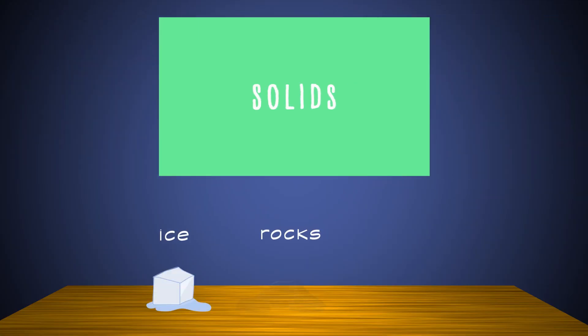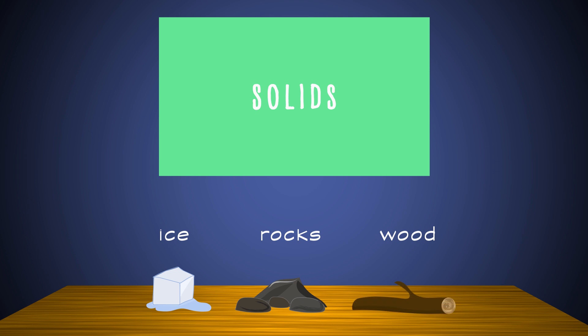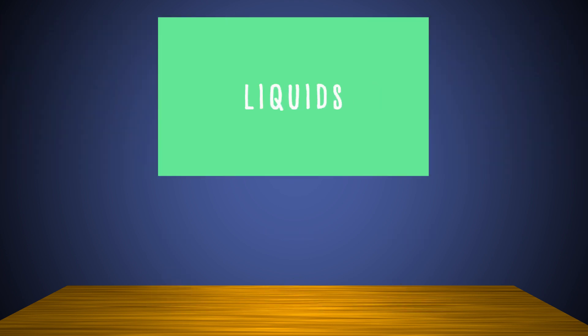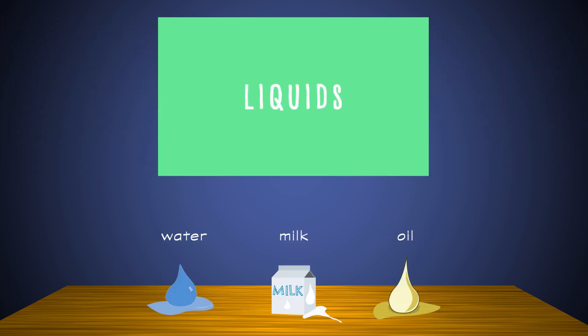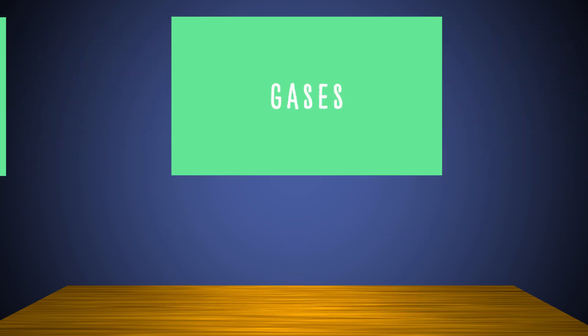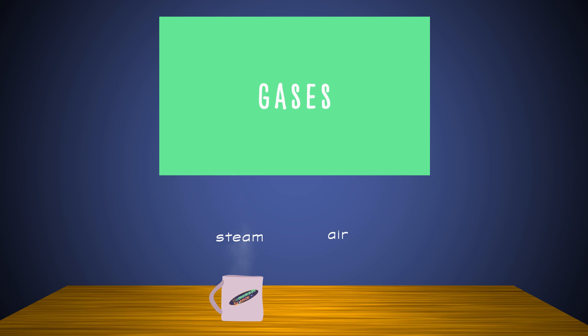Solids like ice, rocks, and wood. Liquids like water, milk, and oil. And gases like steam and the air we breathe. These are all kinds of matter.